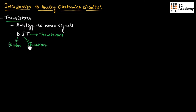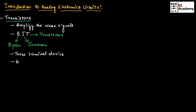There will be two junctions formed in a transistor — that is why the name 'junction' — and transistor means transfer of resistors. A transistor is a three-terminal device and there are two types: NPN transistor and PNP transistor. NPN is the most commonly used transistor.